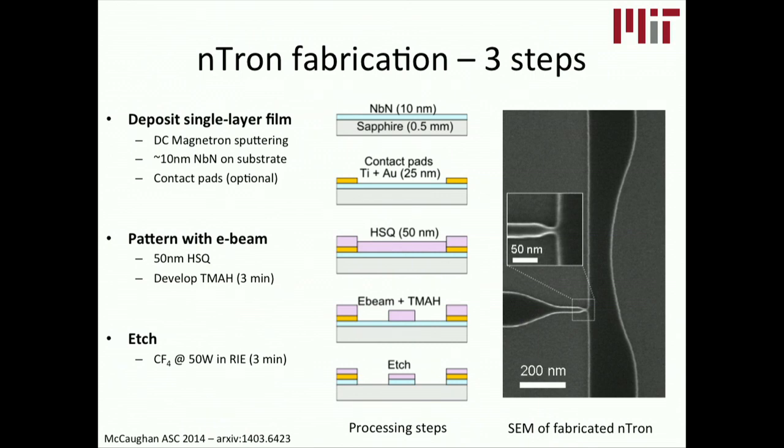You pattern some resist with whatever method you want, in our case E-beam. And then you etch the stuff away. And so the SEM, the scanning electron micrograph you're looking at on the right, is actually a single contiguous film. There are no oxide barriers. There are no tunnel junctions of any kind. There's no gaps, nothing. It's just a metal film that's been patterned into what you see before you.